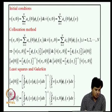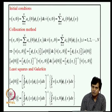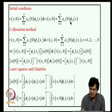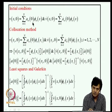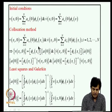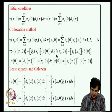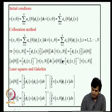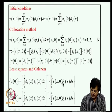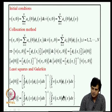To find initial conditions for the generalized coordinates, we note that V(x,0) = ΣA_n(0)φ_n(x) and V̇(x,0) = ΣȦ_n(0)φ_n(x). In the collocation method, we demand the error is zero at N points to get N equations for A_n(0) and Ȧ_n(0). In the least squares and Galerkin methods, A(0) is given by the inverse of the mass matrix times the integral of the initial condition over the domain, requiring additional computation.